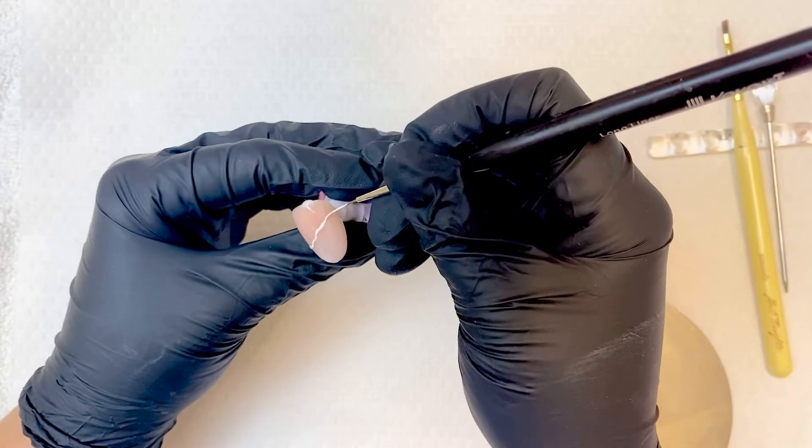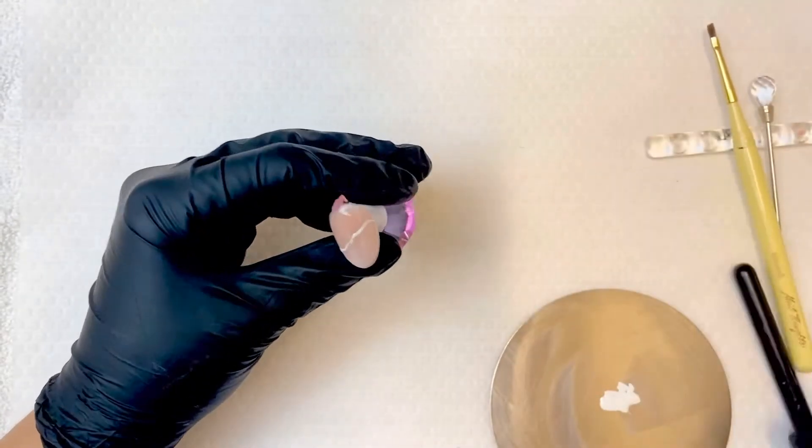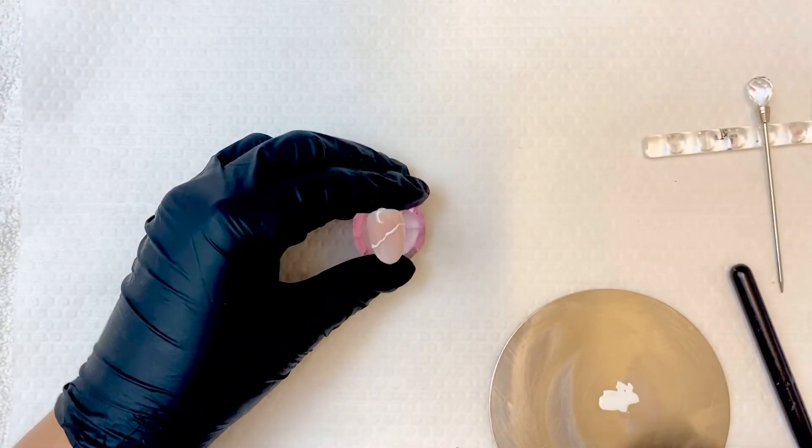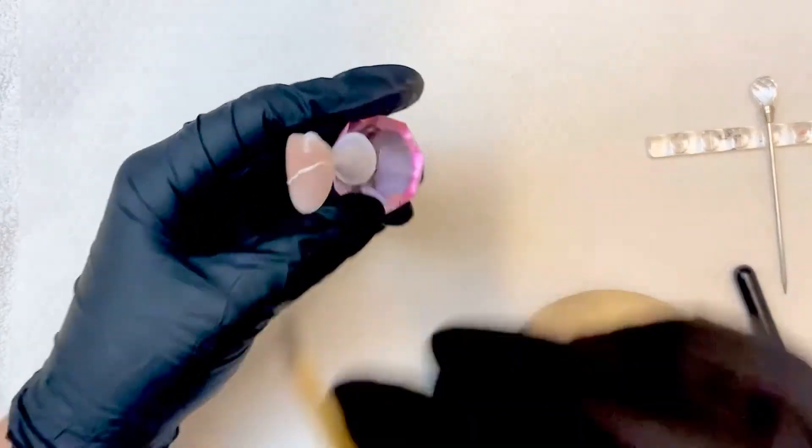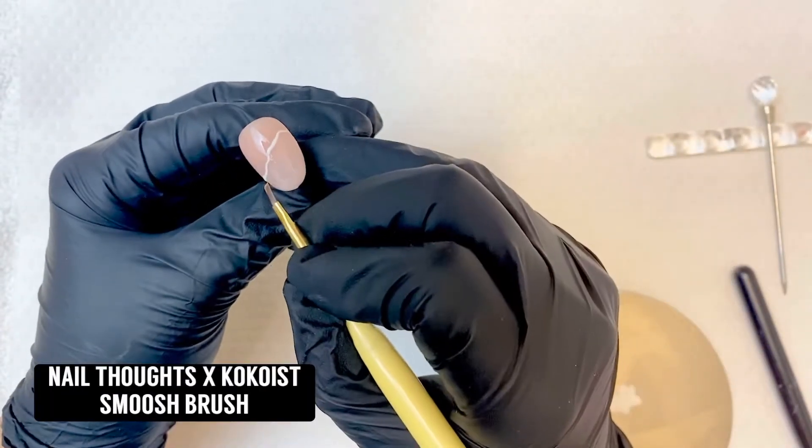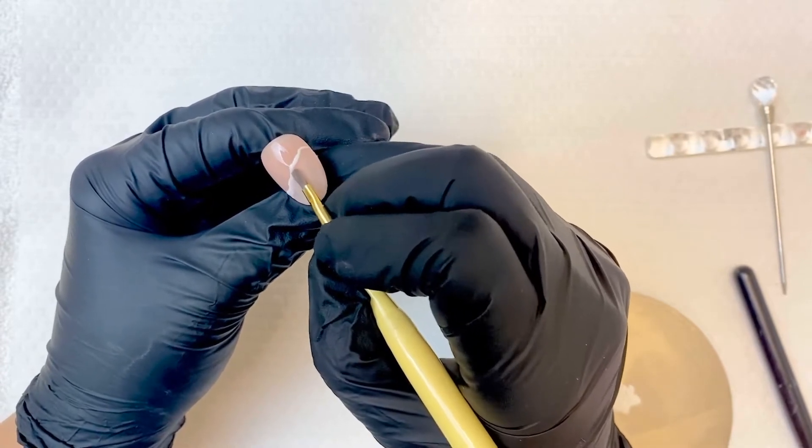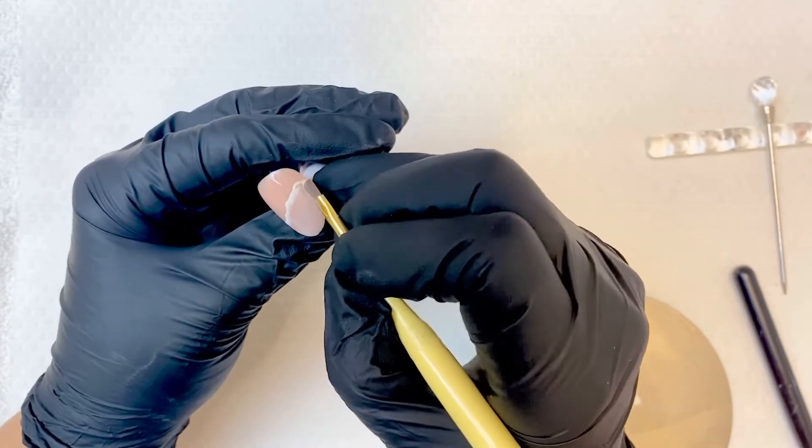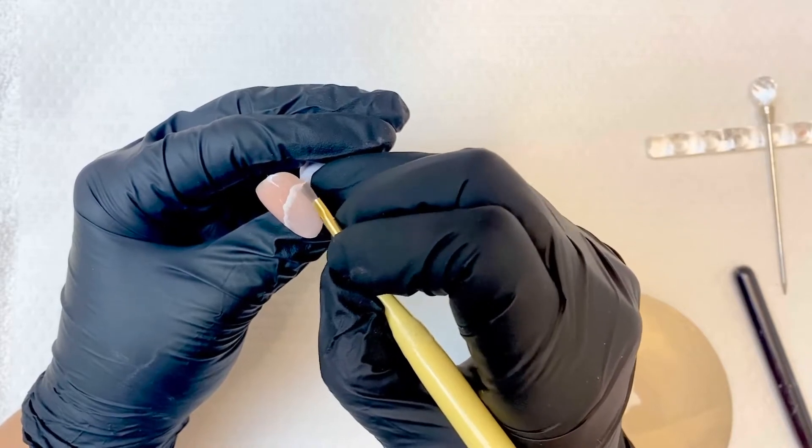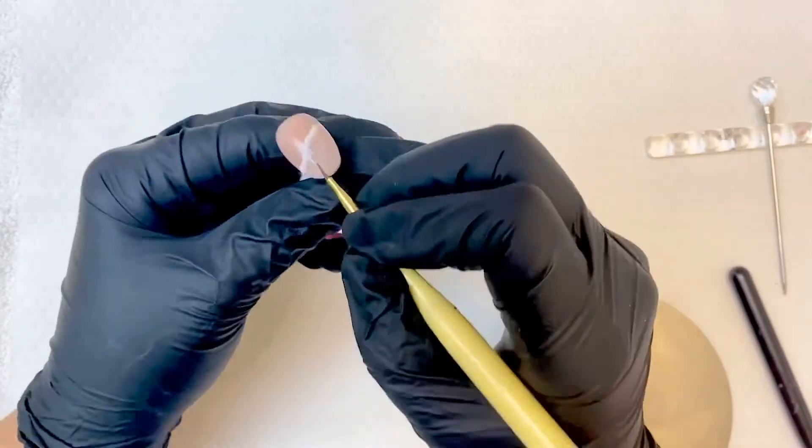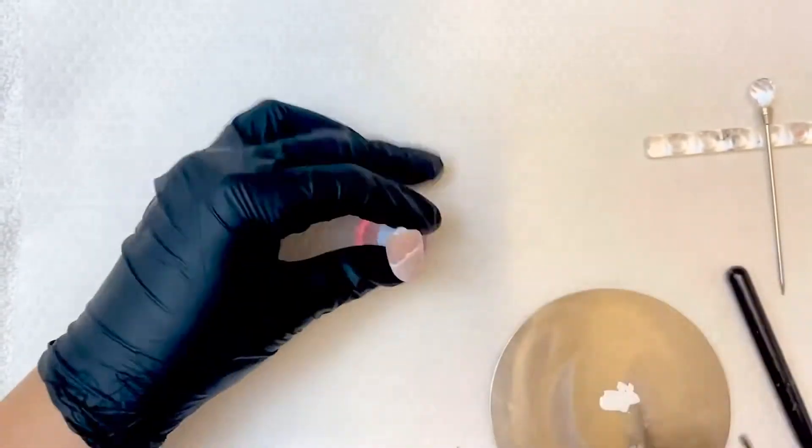We're going to trace that out and once we have that in place, we're not going to cure it. We're going to go in with the Nail Thoughts smoosh brush and gently, using the edge of the brush, pull that downwards to create that rock look. Once that line is looking how you want it, go ahead and pop it in the lamp and cure it, and then we're going to go in with a second line.